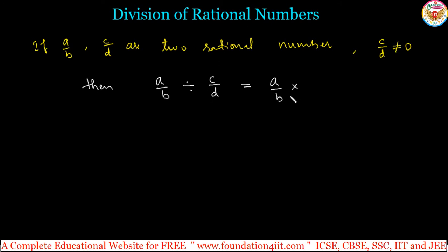So if we keep multiplication symbol, now that is nothing but reciprocal of c by d. So we can take this reciprocal of c by d. That equals a by b into reciprocal, which is d by c.